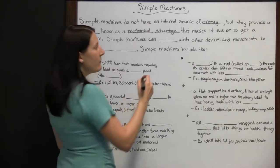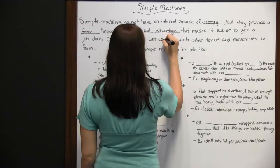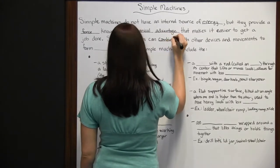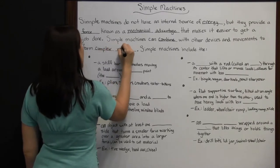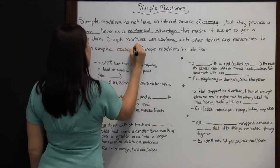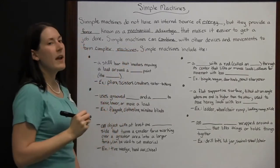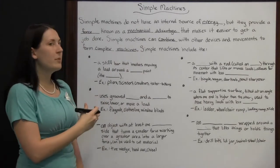Simple machines can combine with other devices and movements to form complex machines. Any machines that you know of are going to be made up of one or more of these simple machines.